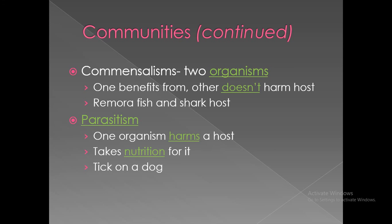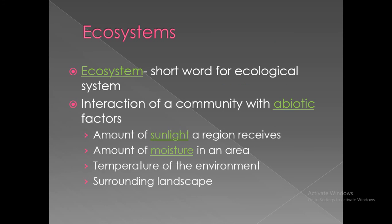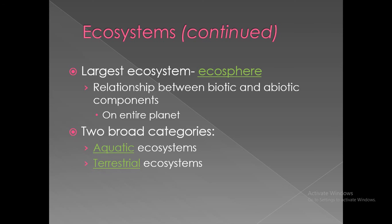After community, there is the Ecosystem. An ecosystem is a short word for ecological system — the interaction of a community with abiotic factors like the amount of sunlight a region receives, moisture, temperature, and surrounding landscapes. The largest ecosystem is the ecosphere, representing the relationship between biotic and abiotic components on the entire planet. There are two broad categories: aquatic ecosystem and terrestrial ecosystem.